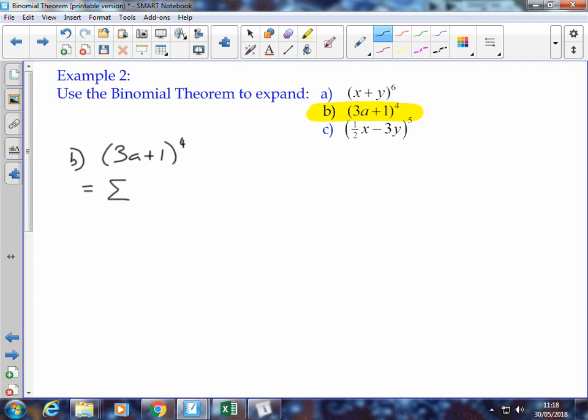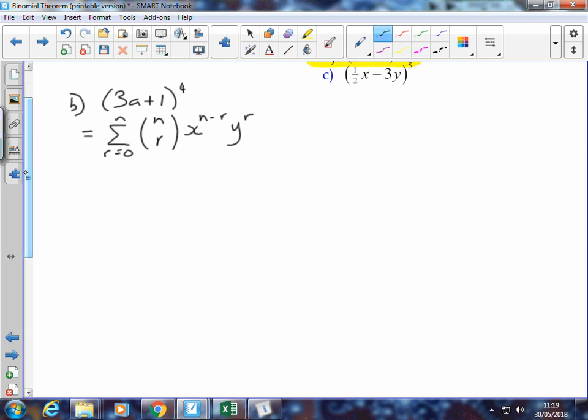It's the sum of all the terms from r equals 0 to n of n choose r, times x to the power of n minus r, times y to the r. It's a good thing, particularly when you're starting off using the binomial theorem, just to write it down in its general form every time, just to help you remember it and all of the aspects of it. It's easy to maybe jump ahead, but it's good just to write it down and then look at it.